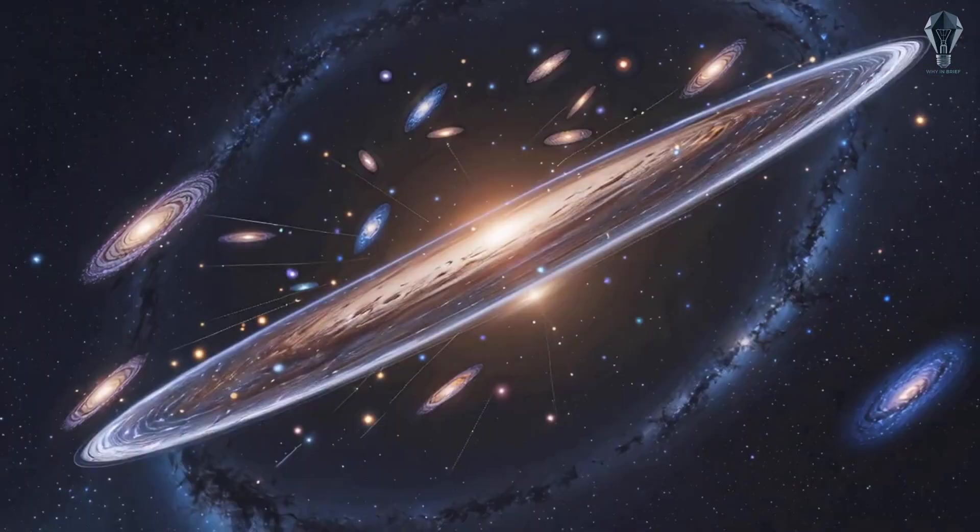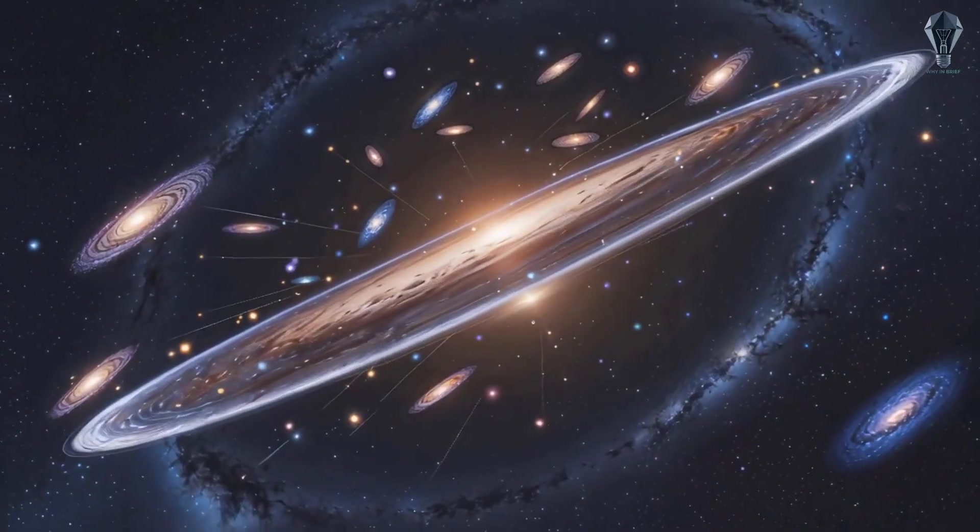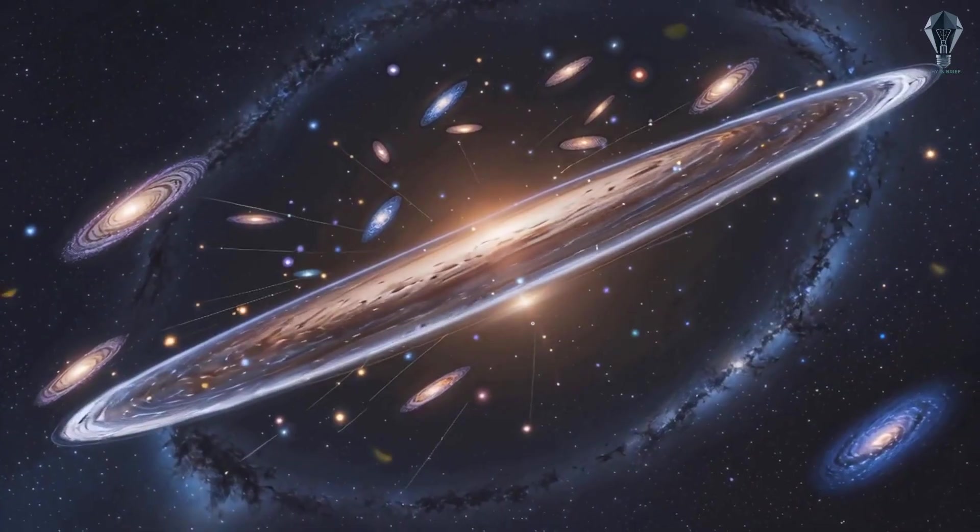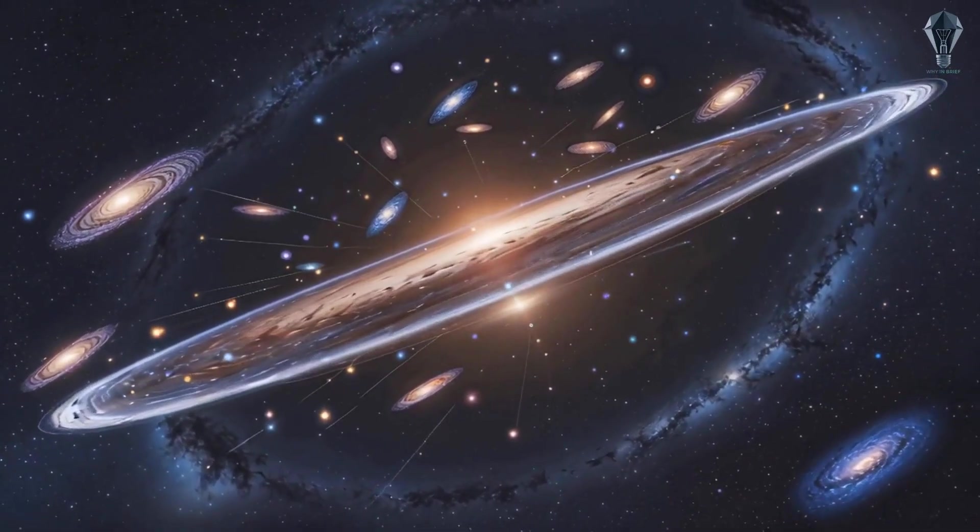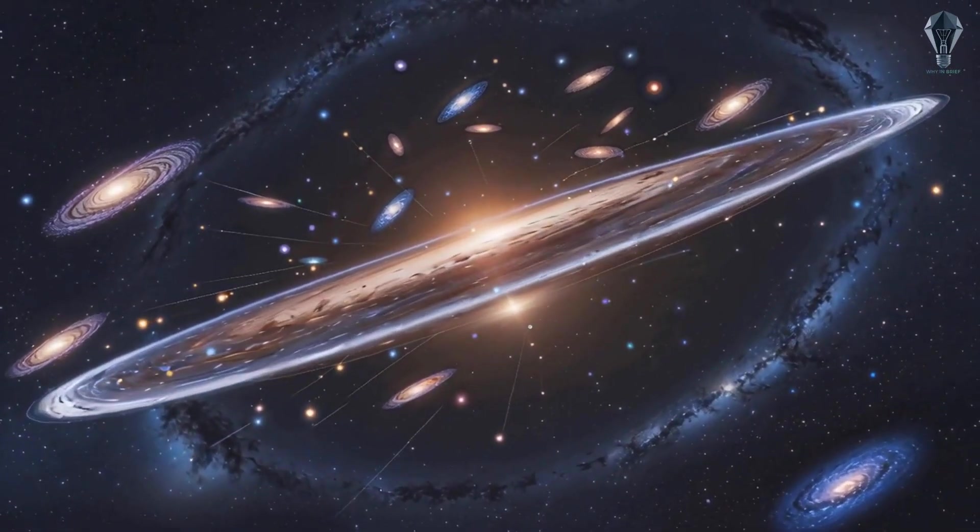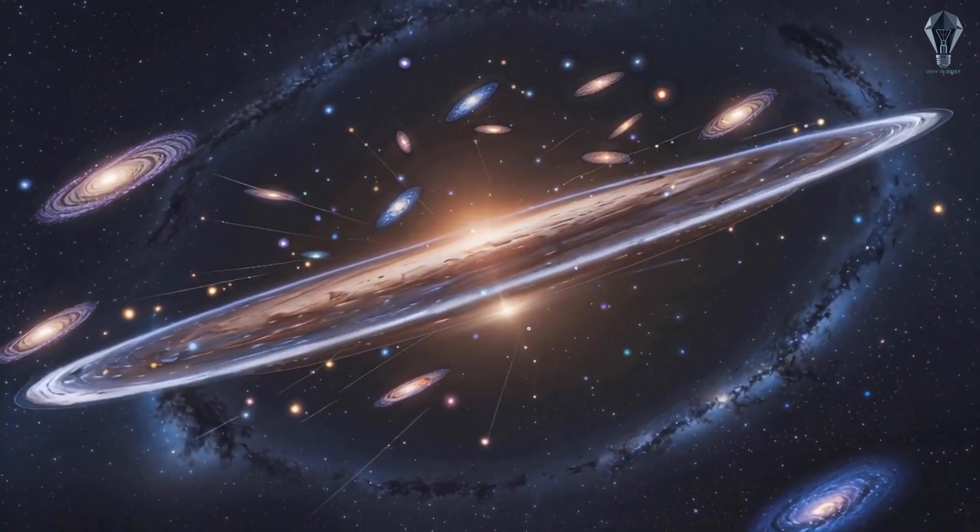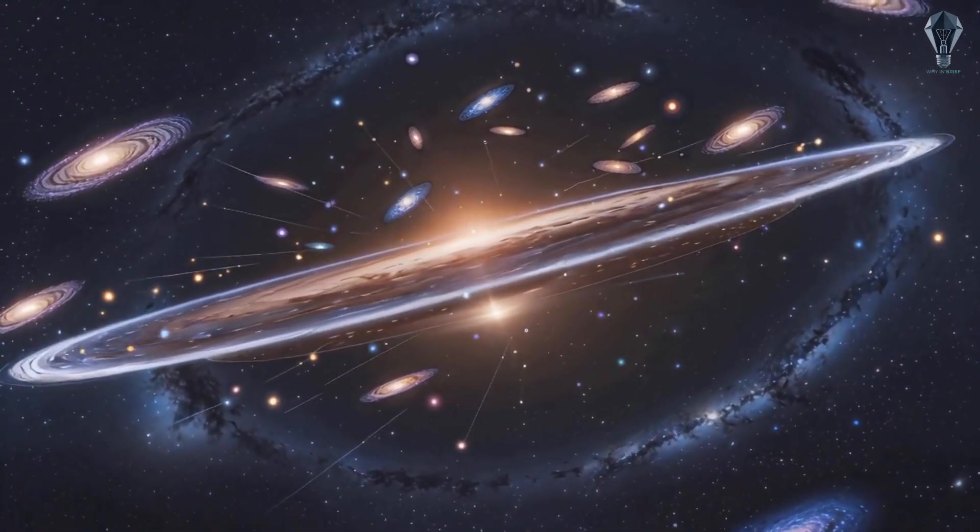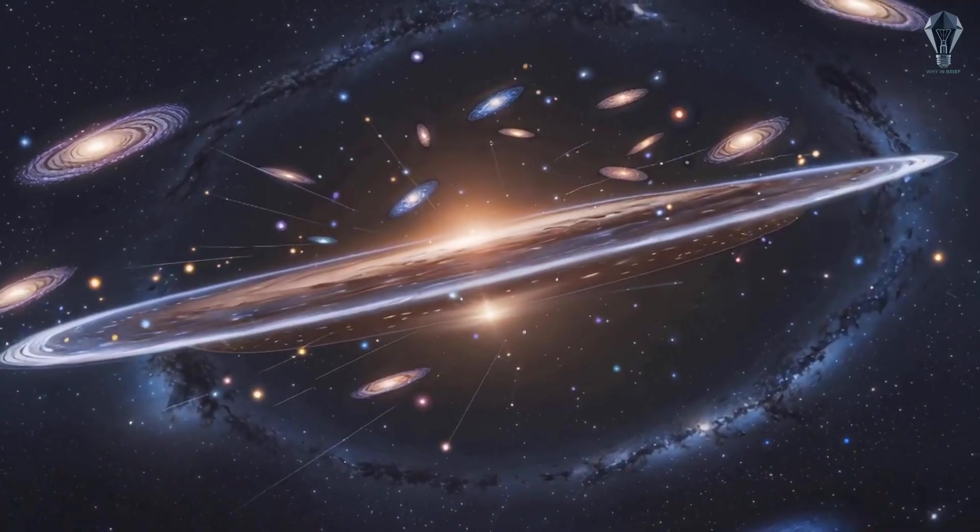Then there's the Great Plane of Andromeda. Many of its satellites are bizarrely aligned in a huge, thin, spinning disk. Imagine throwing confetti, and most of it lines up in a flat, spinning pancake, instead of scattering randomly.